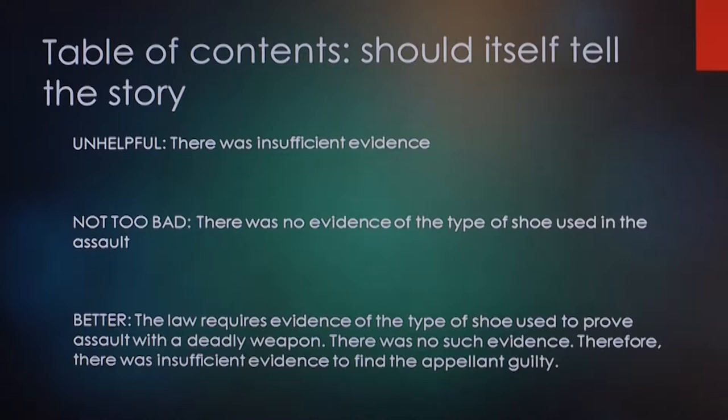The unhelpful heading says simply 'there was insufficient evidence.' The not-too-bad version says 'there was no evidence of the type of shoe used in the assault.' The better heading for the table of contents is: 'The law requires evidence of the type of shoe used to prove assault with a deadly weapon. There was no such evidence. Therefore, there was insufficient evidence to find the appellant guilty.' When you say table of contents, you mean this is an argument heading — the judge and clerk will read that and know exactly the law, the facts, and what the holding should be.